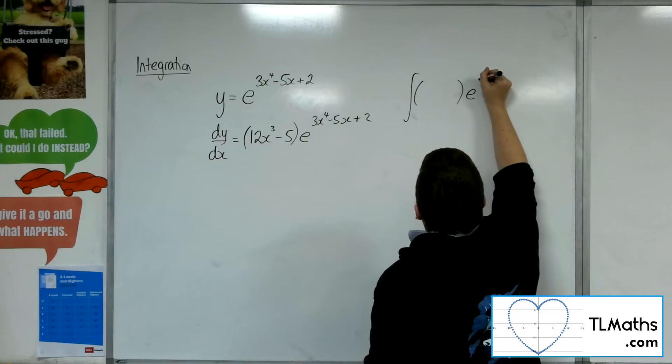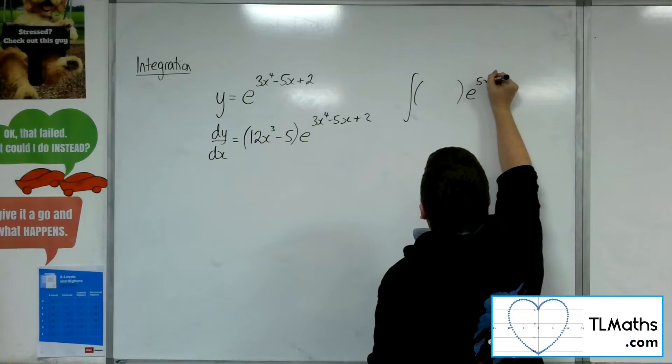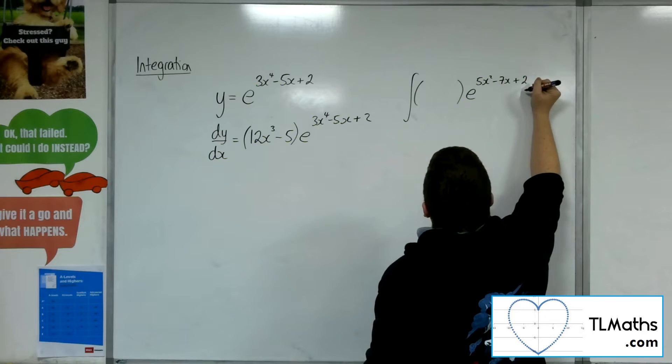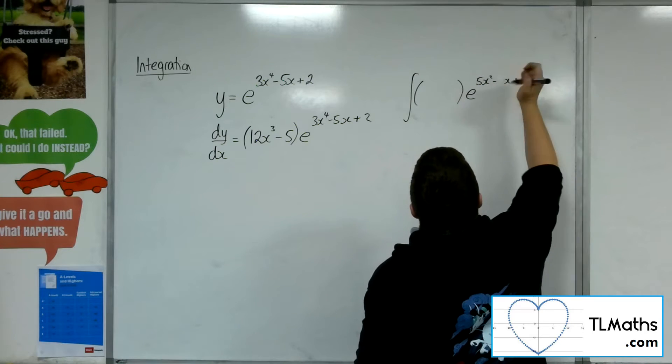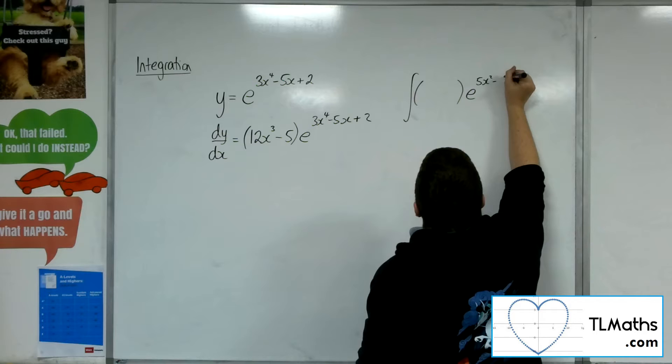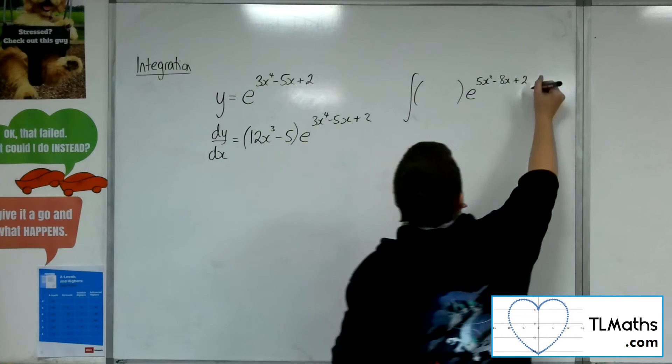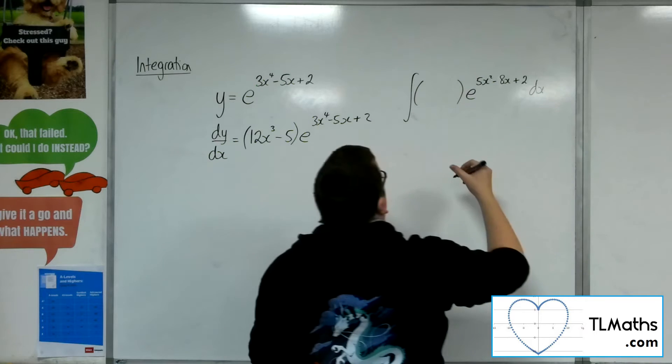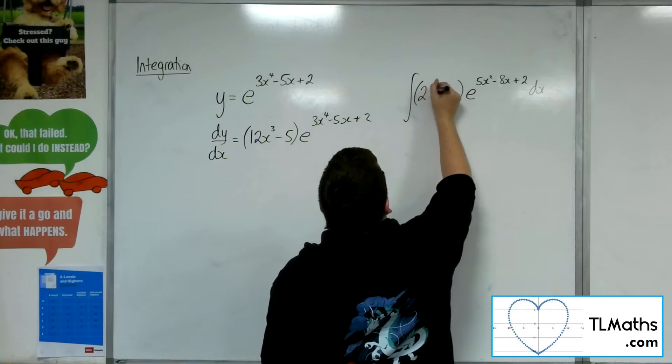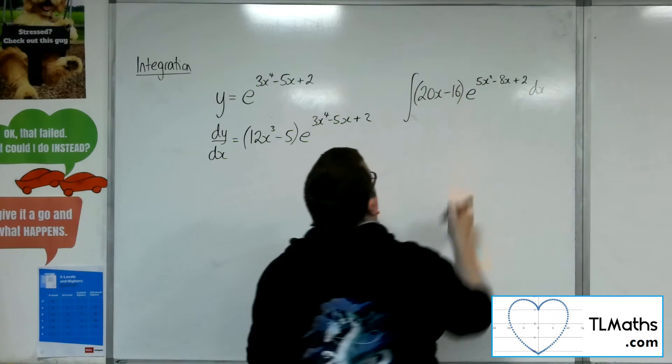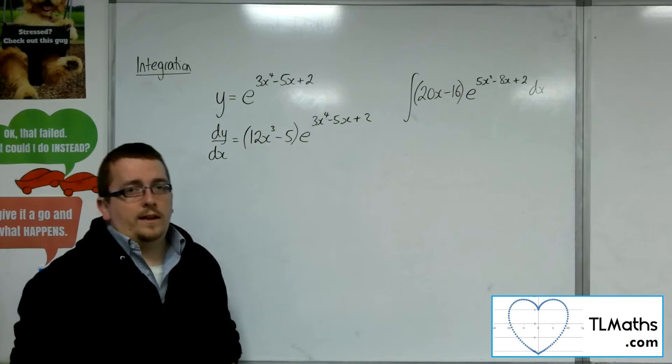So let's say I've got 5x squared minus 7x plus 2. Let's not have 5, let's have 8. So 5x squared minus 8x plus 2. And let's have 20x minus 16 inside the bracket.